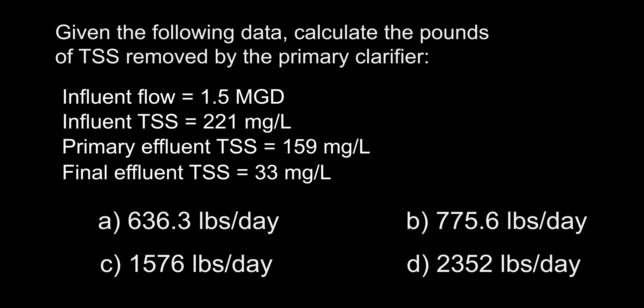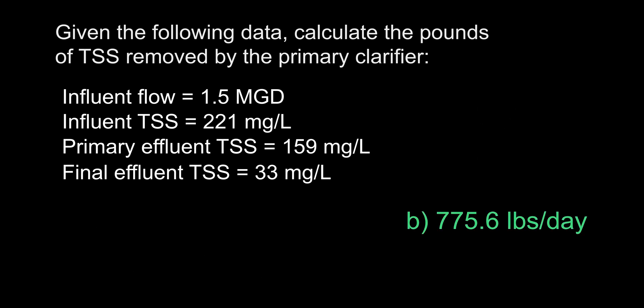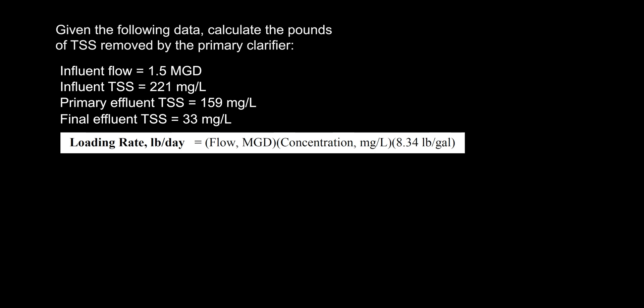Given the following data, calculate the pounds of TSS removed by the primary clarifier. This is another question using the loading rate formula. Loading rate is one of the most utilized formulas by operators, so you should have it memorized. We are going to figure out the total suspended solids loading in our influent and subtract that by the total suspended solids loading of our primary effluent. The difference between those numbers will indicate how much is being removed by the primary clarifier.